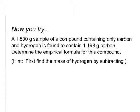Now you try. We have a 1.500 gram sample of a compound that contains only carbon and hydrogen. We're told the amount of carbon in it is 1.198 grams. Determine the empirical formula for this compound. One hint: when you find the mass of each element, you already know the mass of the carbon, but to find the mass of hydrogen, you will need to subtract. Good luck!